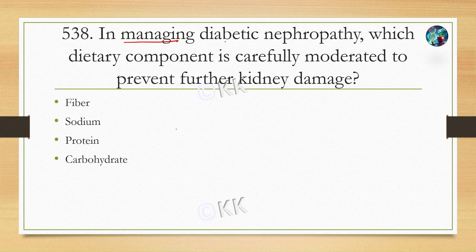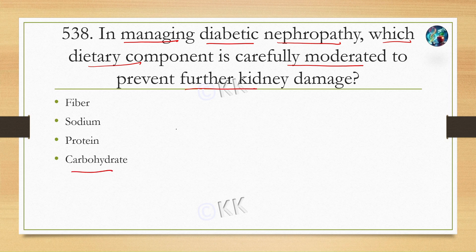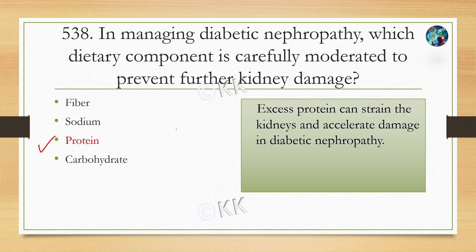In managing diabetic nephropathy, which dietary component is carefully moderated to prevent further kidney damage? Option A: fiber, Option B: sodium, Option C: protein, Option D: carbohydrate. The correct answer is Option C, protein. Excess protein can strain the kidneys and accelerate damage in diabetic nephropathy.